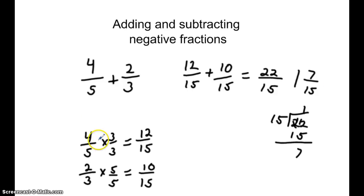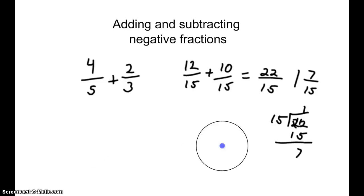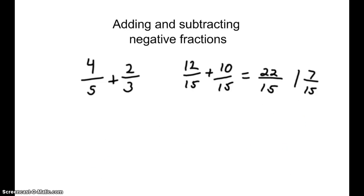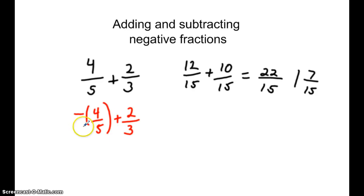Let's see the impact of throwing in a negative fraction using this same type of fraction setup. We're going to erase this work, and instead of 4 fifths plus 2 thirds, it's going to be negative 4 fifths plus 2 thirds. How is that going to change our problem? The methodology is the same — finding the common denominator. All we need to do differently is insert the negative sign for that fraction.